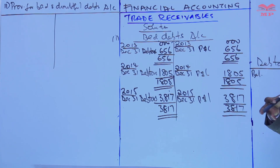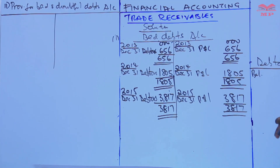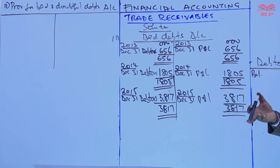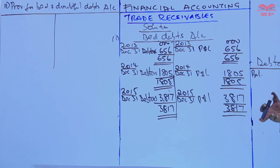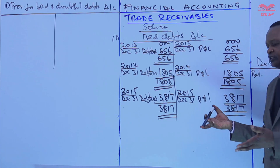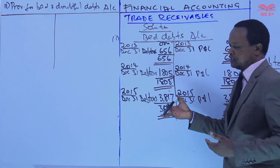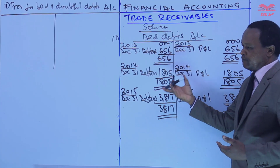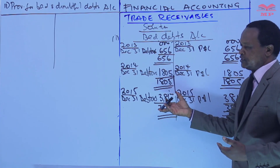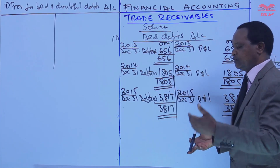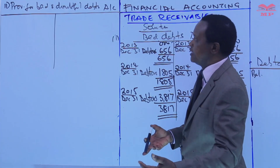If it is the first year of trading, we will debit the profit and loss account and credit the provision. In subsequent periods, it depends on whether the provision is an increase or a decrease. If it is an increase, we credit the provision for bad and doubtful debts; if it is a decrease, we debit the provision for bad and doubtful debts.